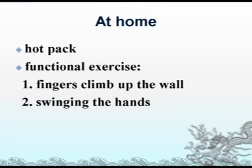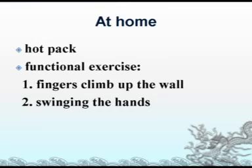B: Swing the hands. Clench both fists gently and swing the upper limbs from front to back, first to the left side, then to the right side. Afterwards, drop the upper limbs at the sides of the body and swing the hands. Repeat this movement 24 times respectively. This exercise promotes qi flow and blood circulation, keeping the upper limbs healthy.